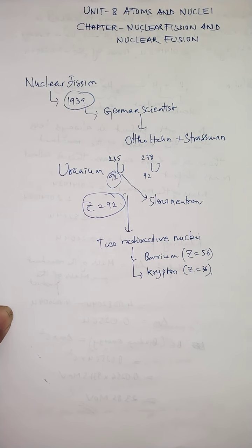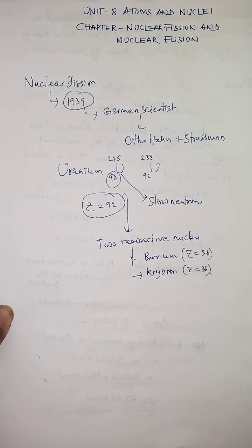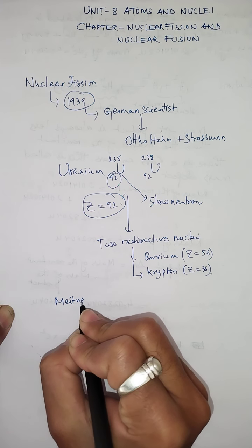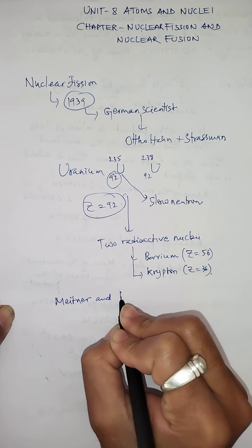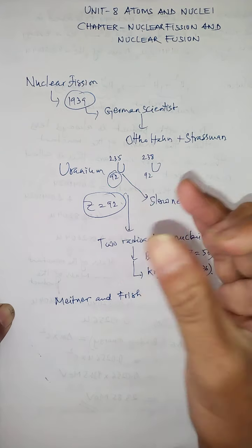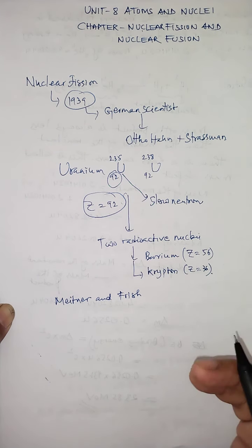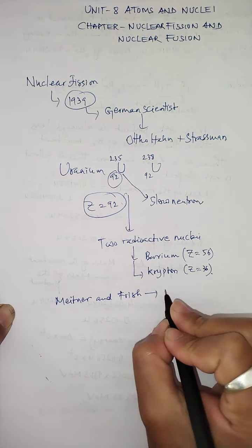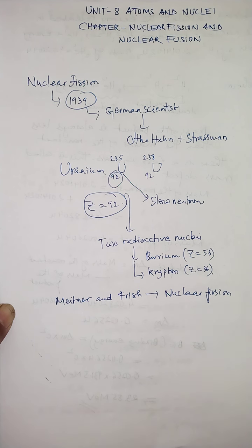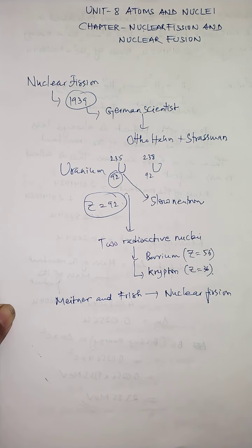This observation was done for the first time by those two scientists, but interestingly there were two other German scientists — named Meitner and Fritz — who named this particular observation: the splitting of a heavy nucleus into lighter nuclei, as the nuclear fission reaction. The naming was done by these two scientists, while the observation was done by the first two. All of them were German scientists.